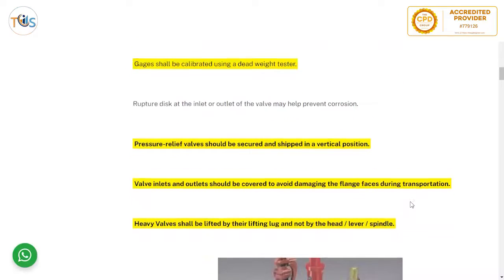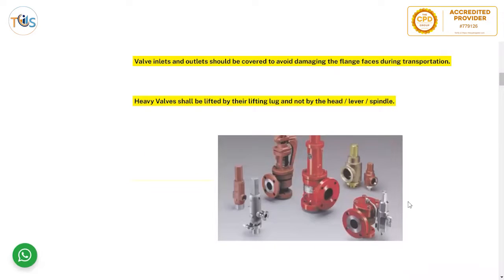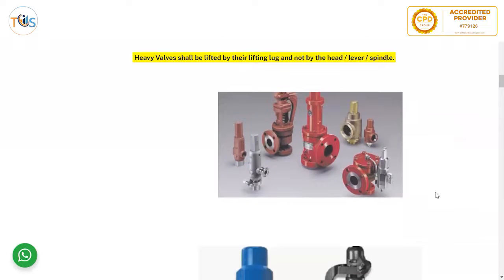Pressure relief valves should be secured and shipped in a vertical position. Valve inlets and outlets should be covered to avoid damaging the flange faces during transportation, because flange face damage can cause leaking after installation. Heavy valves shall be lifted by their lifting lug and not by the lever or spindle, as that would damage the valve. For large valves there are separate lifting lugs for the head and for the whole valve.